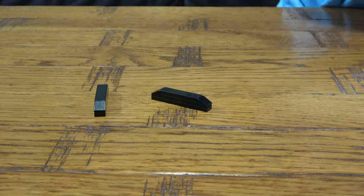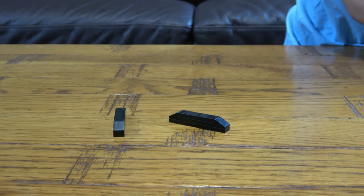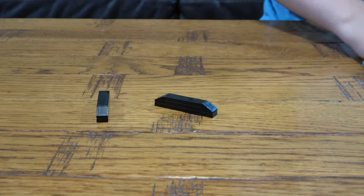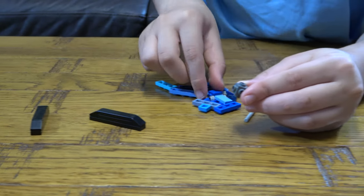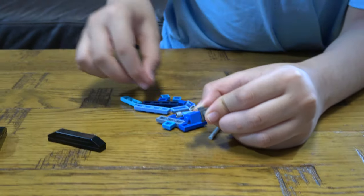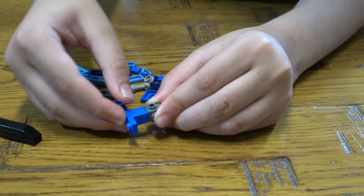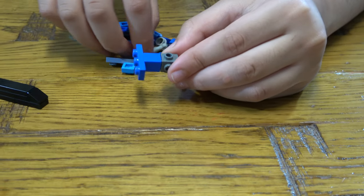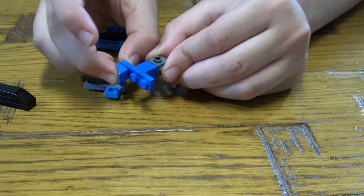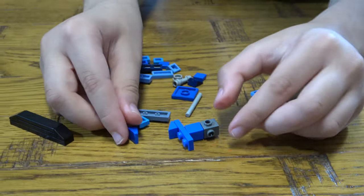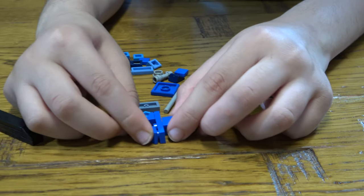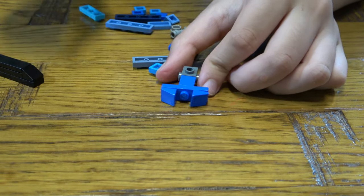Then we are going to build the top of the tank. So first we are going to need this. We place this here, that there, this over here. This here, this here, like that.